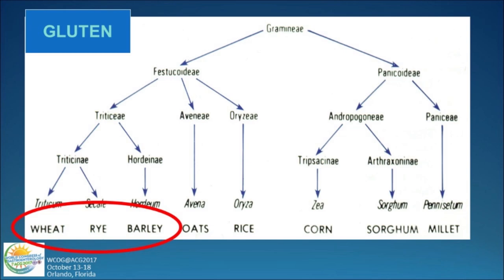Gluten is the term for the storage protein of the cereal grains wheat, rye, and barley. You can see from this genetic tree of the grasses that these grains are closely genetically related, more remotely so from these other so-called safe grains.